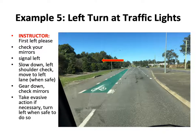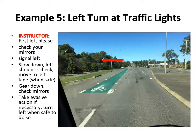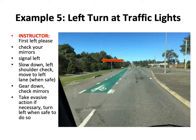Example five: left turn at traffic lights. There are traffic lights ahead with a left turn, and you can see a car coming out from the side street. There's also a green bicycle lane painted. First left, please. Check your mirrors, signal left, slow down, left shoulder check — all clear. Move to the left lane when it's safe to do so. Gear down, check your mirrors, take evasive action if necessary, turn left when it's safe to do so.